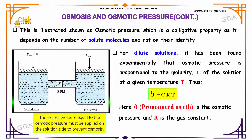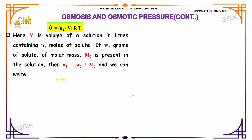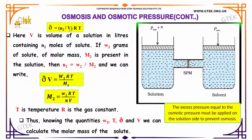Osmotic pressure is a colligative property as it depends on the number of solute molecules and not on their identity. For dilute solutions, it has been found experimentally that osmotic pressure is proportional to the molarity C of the solution at a given temperature. Thus, osmotic pressure π equals (N₂ / V) × RT, where V is the volume of the solution in liters containing N₂ molecules of solute.